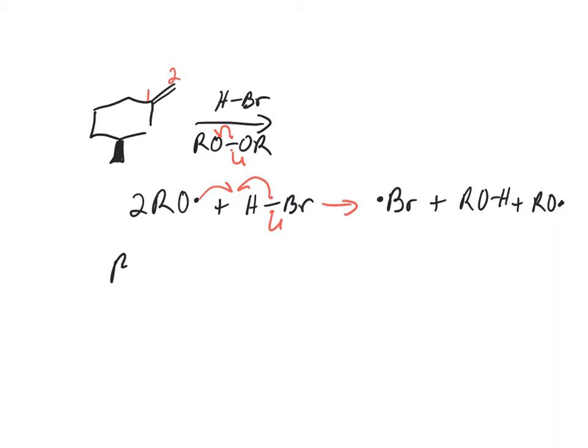Once we have Br dot, how is that going to react with carbon 1 and 2? Similarly to a carbocation, radicals are electron deficient. So where would we rather have the radical — on carbon 1 or carbon 2? Carbon 1, because it's more substituted. A more substituted radical is more stable because of hyperconjugation — those sigma bonds two bonds away help stabilize it. So bromine is going to end up on carbon 2.